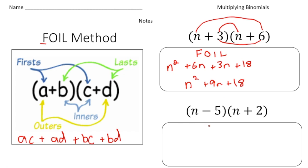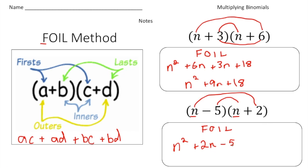Let's try another one. We have (N − 5) times (N + 2). Following FOIL — First: N times N is N squared. Outside: 2 times N is 2N. Inside: negative 5 times N is −5N. Last: negative 5 times 2 is −10. Simplifying the middle terms, 2N − 5N is −3N, so the answer is N squared minus 3N minus 10. That's the product.